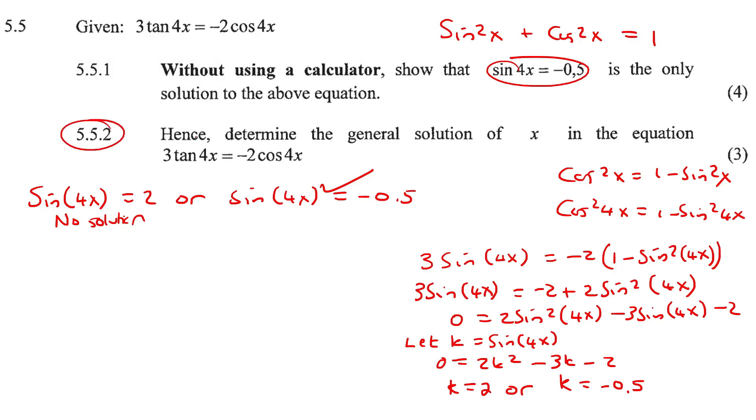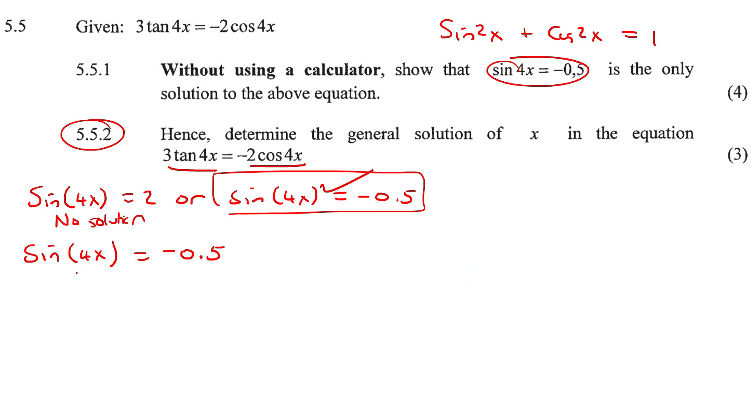Now moving on, it says hence determine the general solution. Okay, so of this same equation. So we don't have to start here, we can actually just go from here. So we know that sin of, and go watch my general solution videos if you are not comfortable with general solution, I've got a whole load of those. And so the way that we would do this now is we would have to go get the reference angle, but don't use the negative on the calculator. So your reference angle is going to be, it's when you say shift sin of just 0.5, and that'll give you 30.